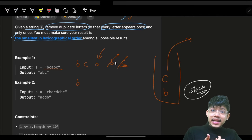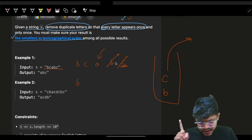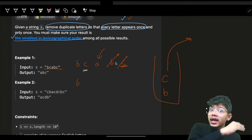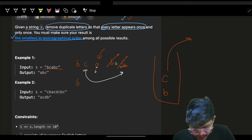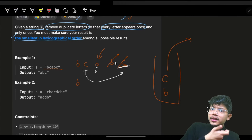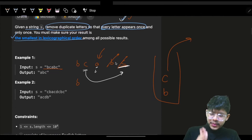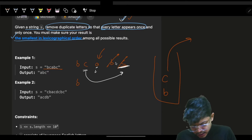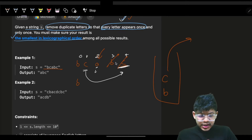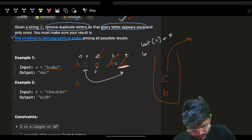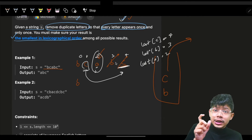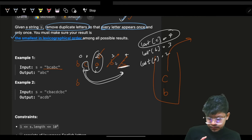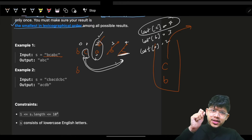We also need to know if a character occurs later in the string. If I'm at index i and want to remove 'c', I need to know that 'c' has an occurrence in the future so I can still include it later. I need to track the last occurrence of every character. For example, last occurrence of 'c' is at index 4, 'b' at 3, 'a' at 2. If I'm at index 2 and removing 'c', the last occurrence (4) must be more than my current index (2).